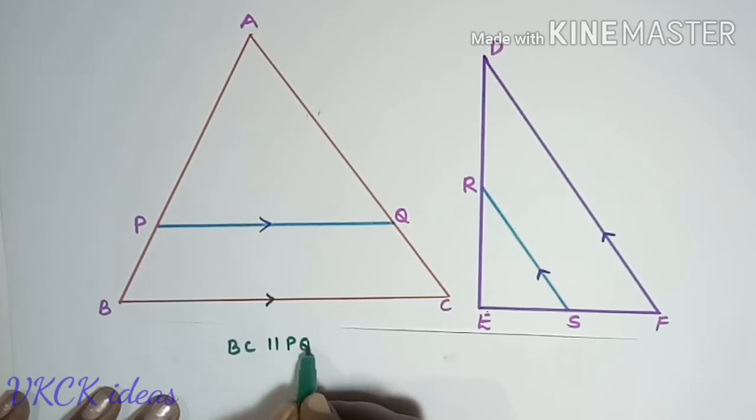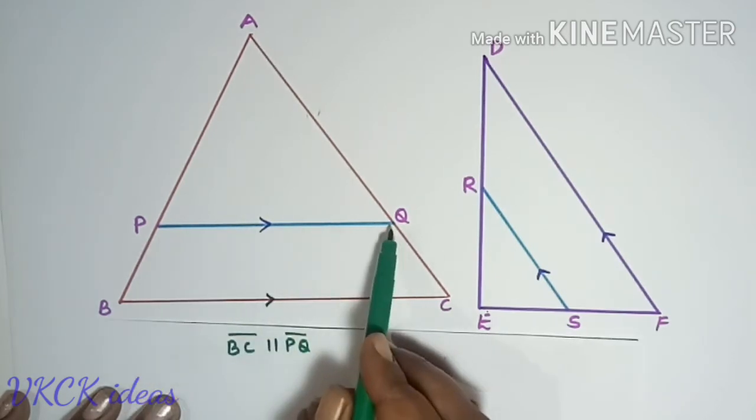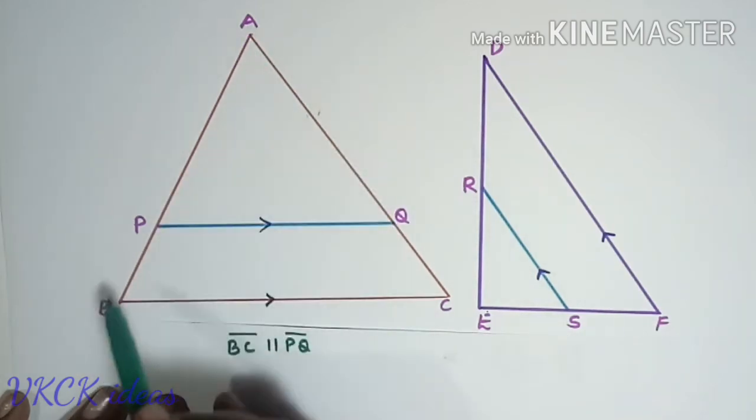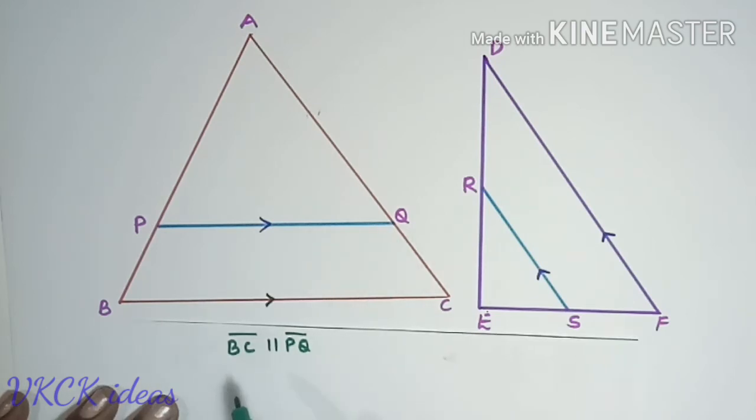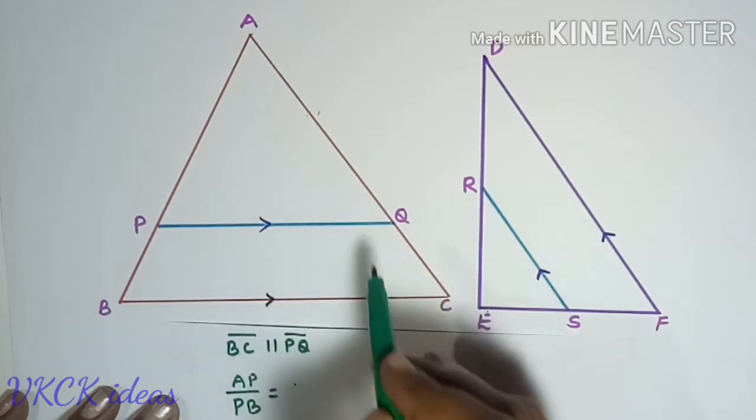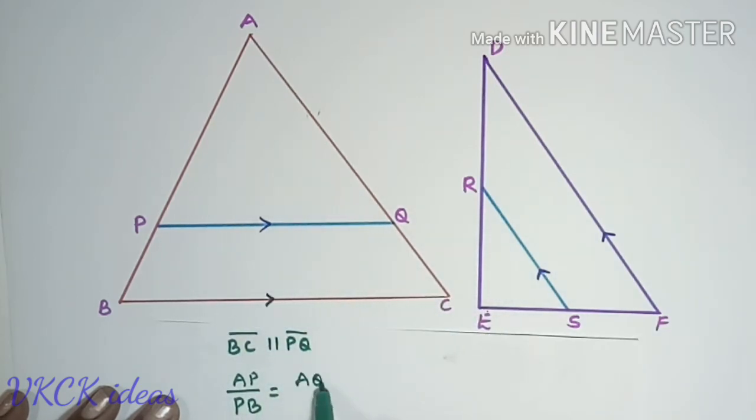Now PQ is parallel to BC. PQ is the line segment which is intersecting AB and AC at P and Q. Therefore AP by PB will be equal to AQ by QC.